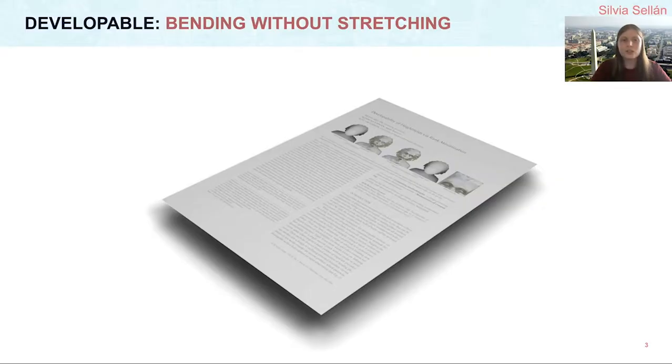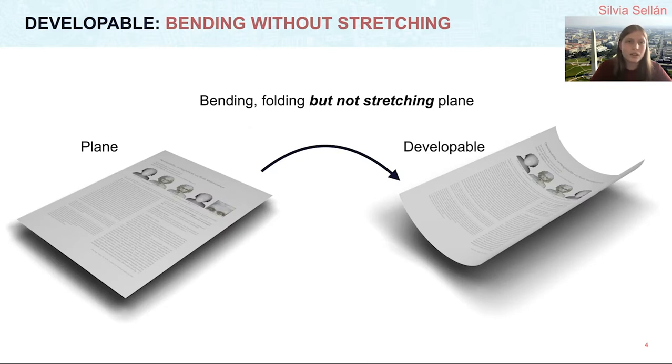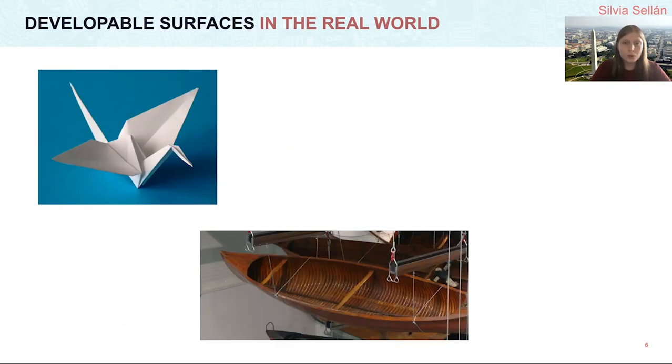A surface is said to be developable if it can be obtained by bending or folding a planar patch without stretching it. Developable surfaces show up in the real world every time we build something out of sheets of non-stretchable material like paper, wood, or steel.